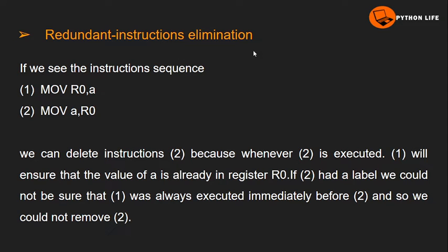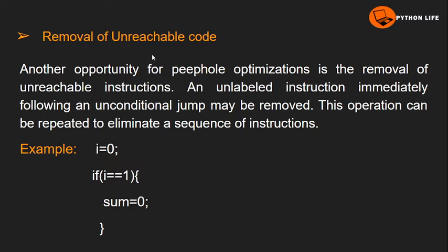The next characteristic is removal of unreachable code. Unreachable code means statements that are never executed. Another opportunity for peephole optimization is the removal of unreachable instructions. Instructions immediately following an unconditional jump may be removed. This operation can be repeated to eliminate a sequence of instructions. For example, consider: i = 0; if (i == 1) — here i is set to 0.